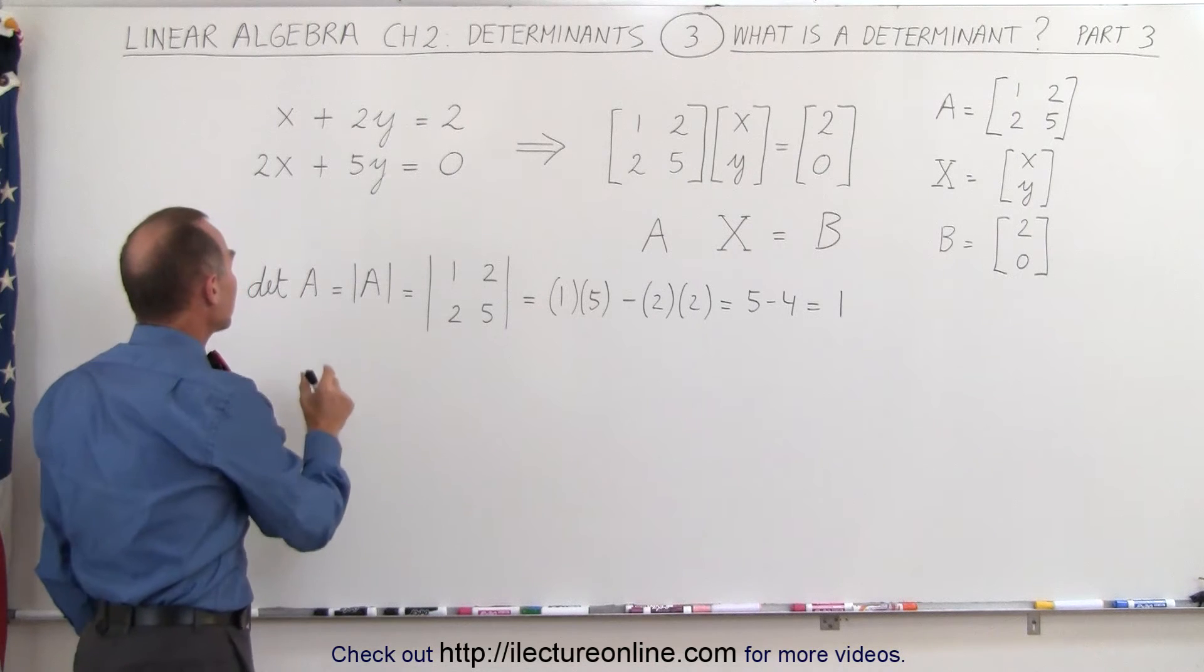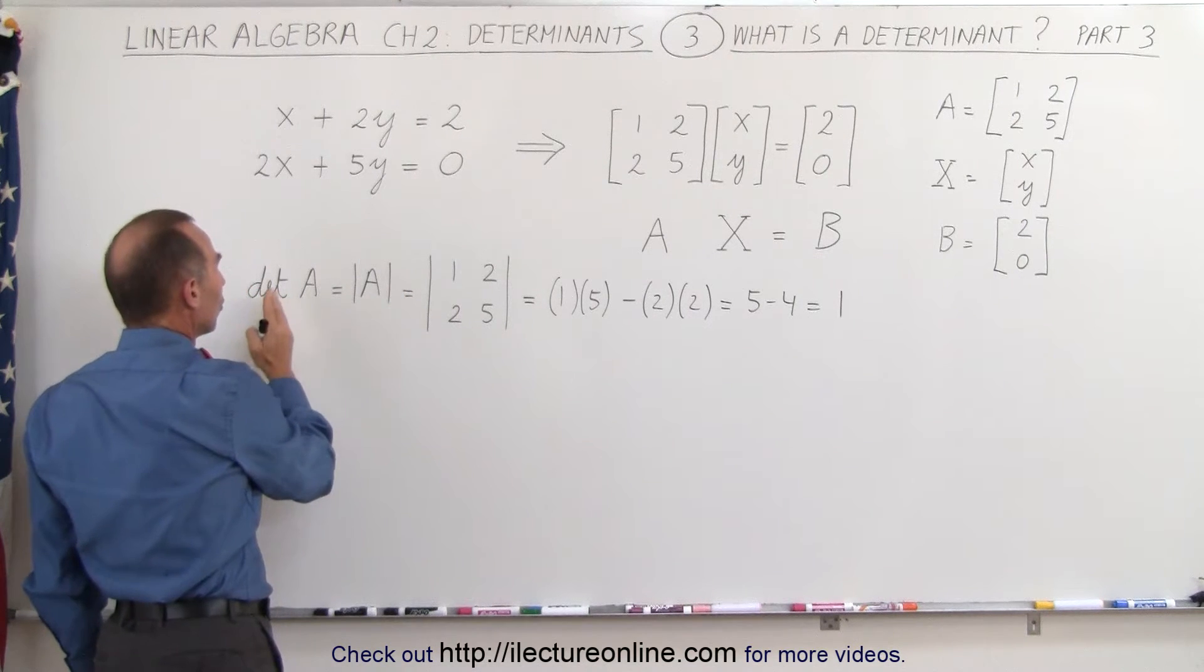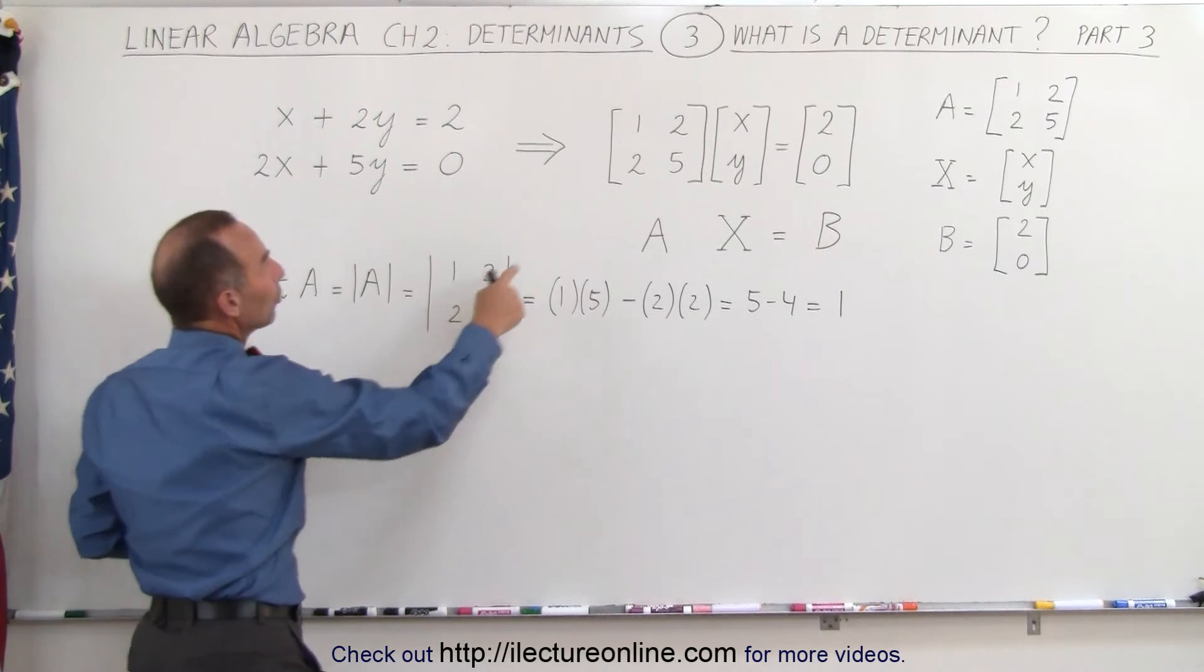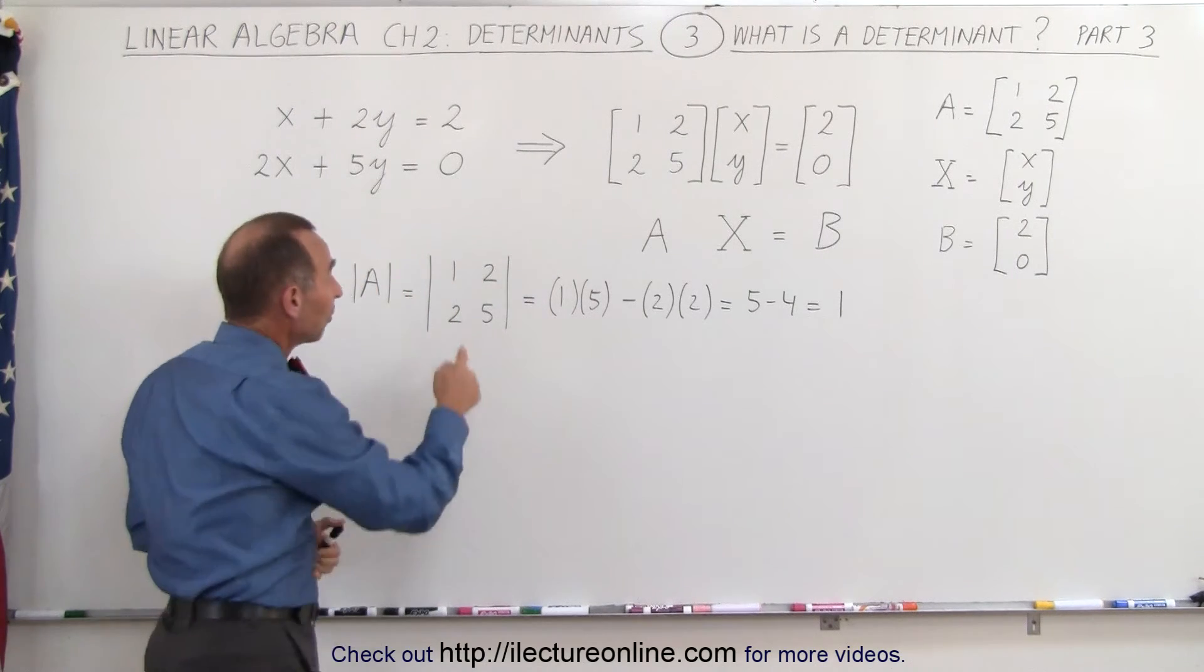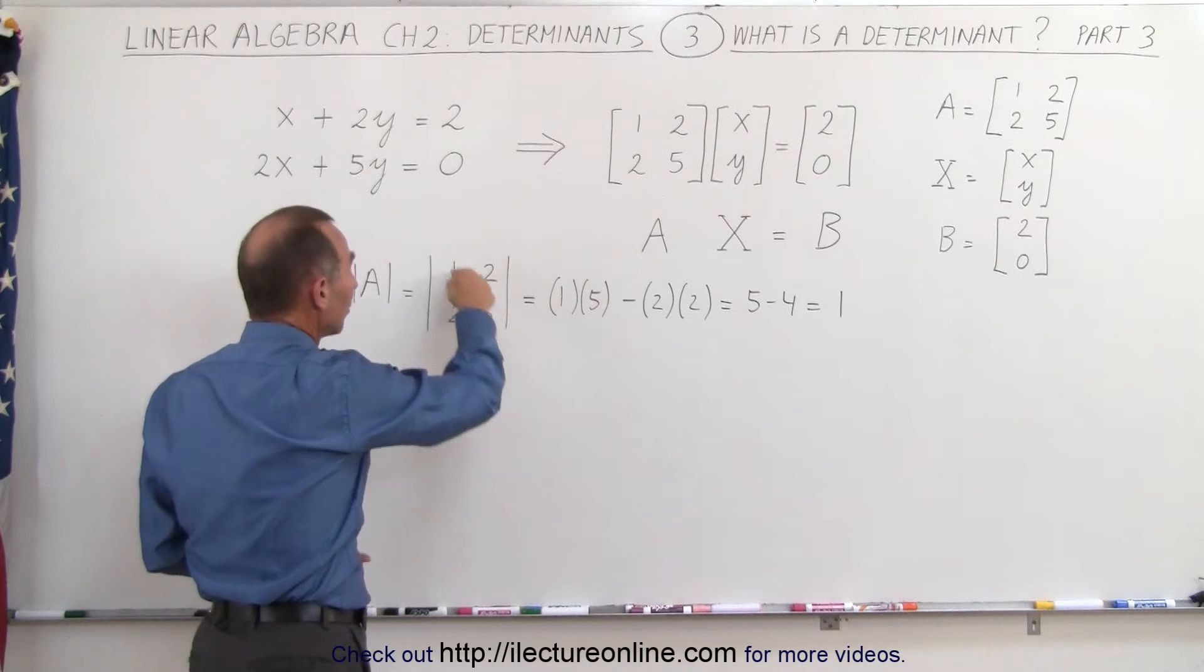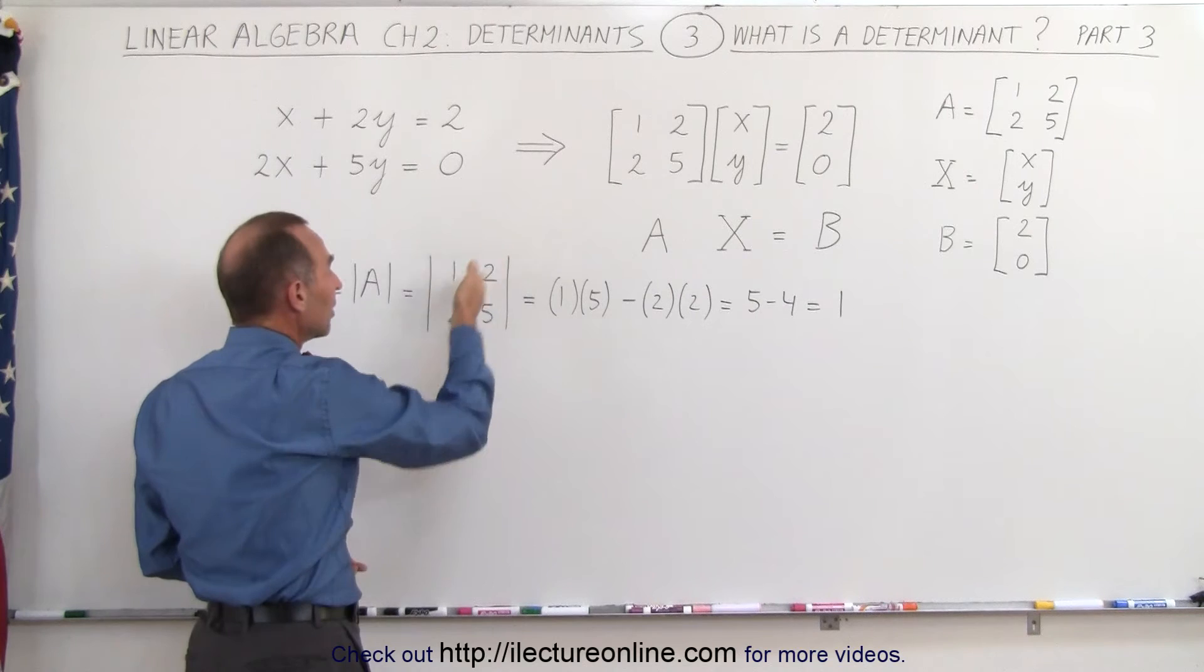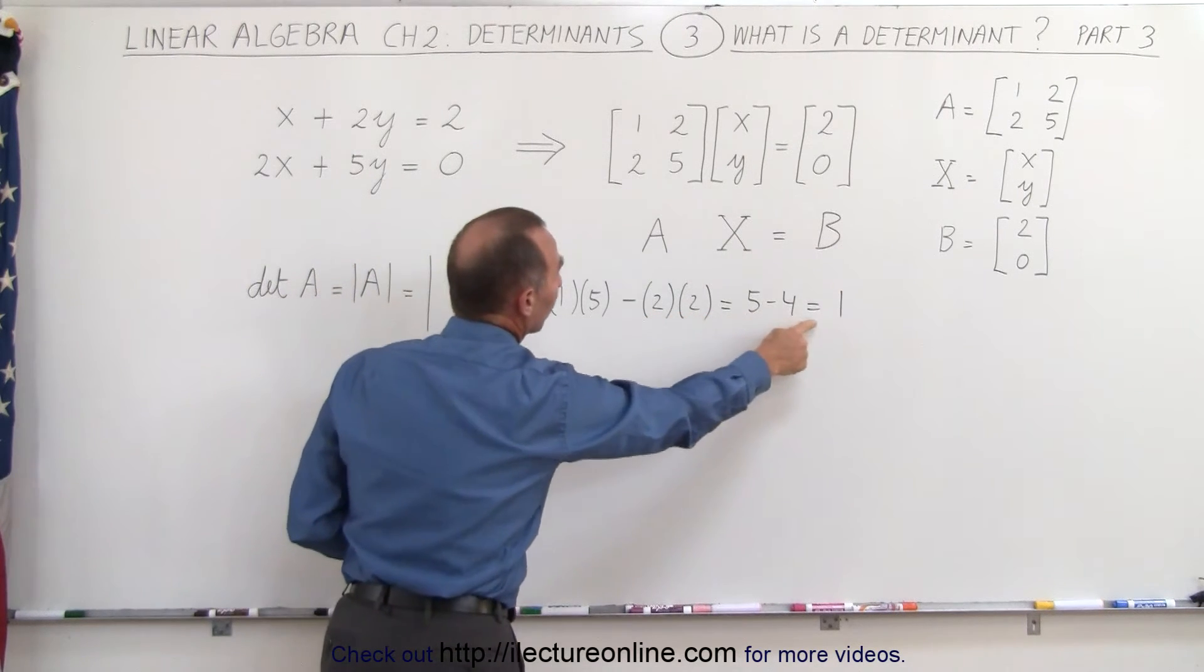If you take matrix A and find its determinant, the determinant of A is A with lines like this, equal to the same elements but with straight lines. Since it's a 2 by 2 matrix, we multiply the diagonal numbers: 1 times 5, and subtract the product of the other diagonals, 2 times 2. This gives us 5 minus 4, which equals 1.